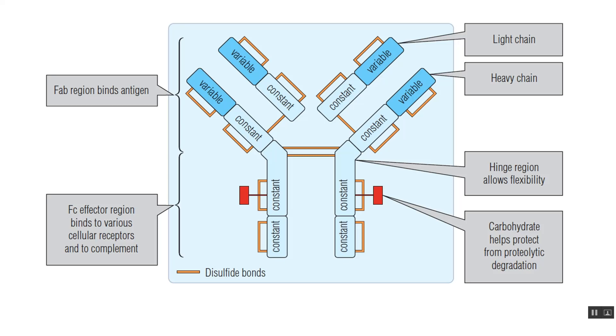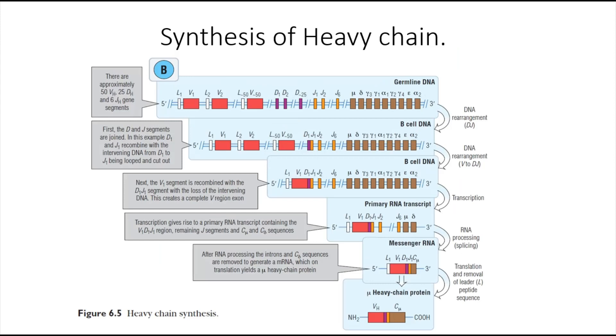two light chains and two heavy chains. The light chain consists of one variable region and one constant region. The heavy chain consists of one variable region and three or more constant regions.